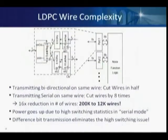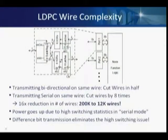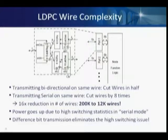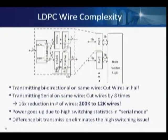On wire complexity: we can go from 200K wires to 12K wires by doing serial communication in a bidirectional fashion. However, the toggle rate significantly goes up. The way to address this is difference communication — only sending the difference of messages from one iteration to the next.